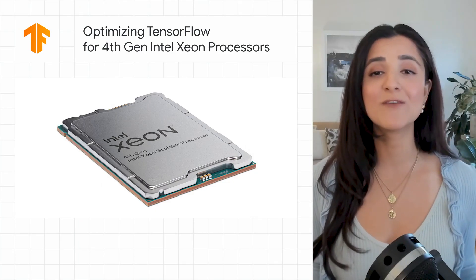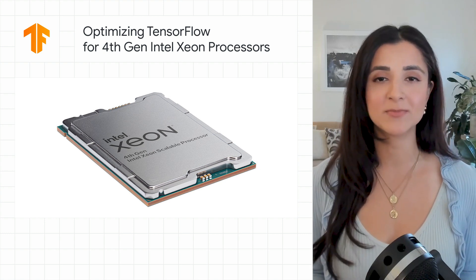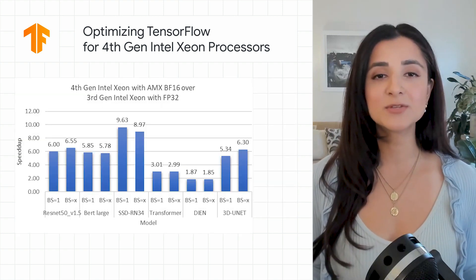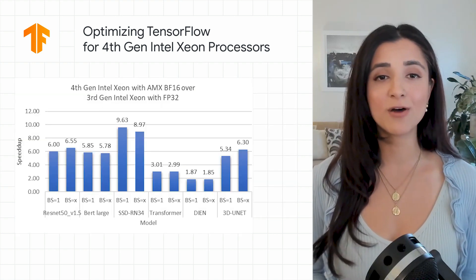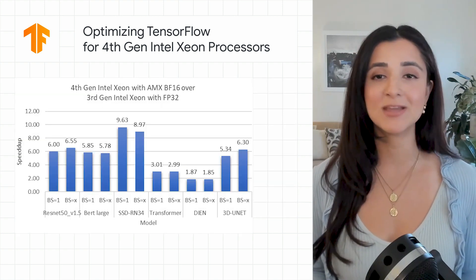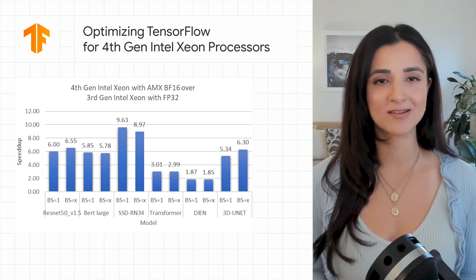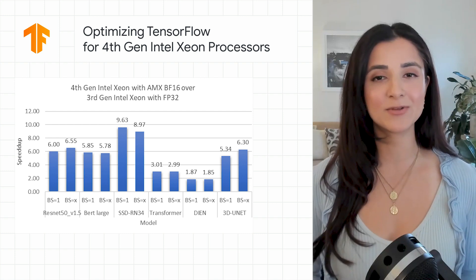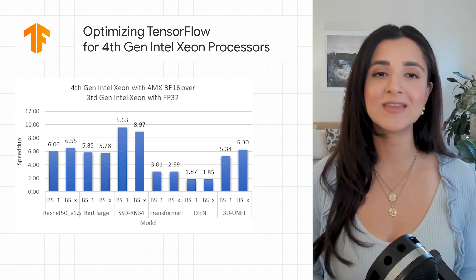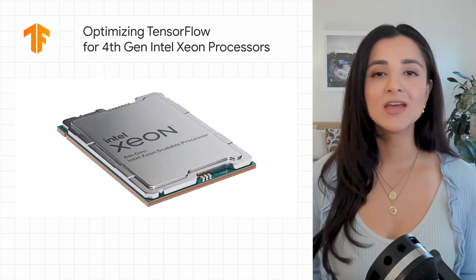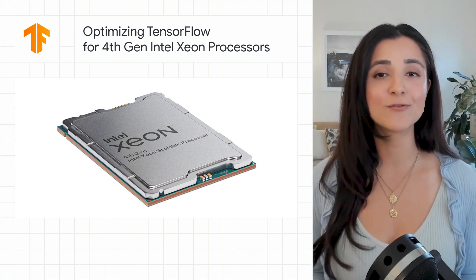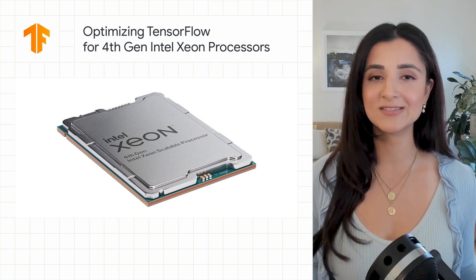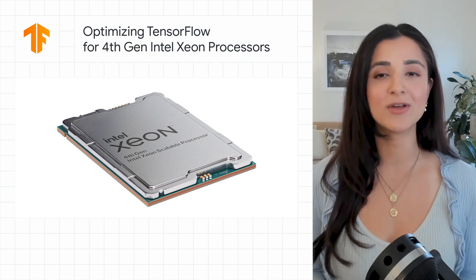Intel and Google have been collaborating on TensorFlow optimizations for the next generation of Intel Xeon processors. These optimizations accelerate TensorFlow models using Intel Advanced Matrix Extensions, or AMX. These features are now available as a preview in the nightly build of TensorFlow, and also in the Intel-optimized build. TensorFlow developers can now use Intel AMX on the 4th Gen Intel Xeon Scalable Processor using the existing Mixed Precision support available in TensorFlow.